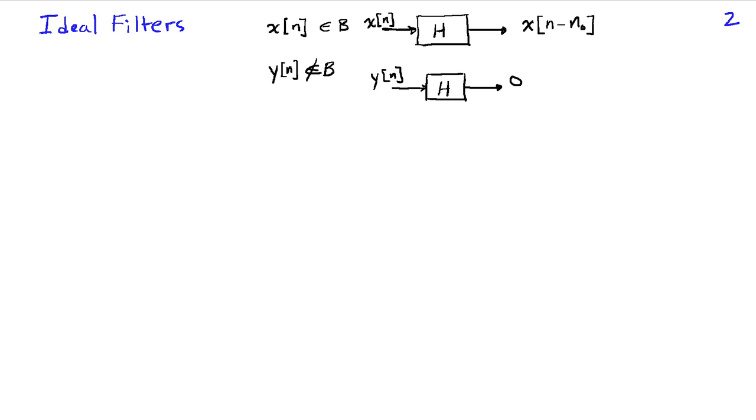So an ideal filter, based on the diagrams we just looked at, an ideal filter takes a signal, x of n, and if it lies in the band that's going to be passed, the pass band,